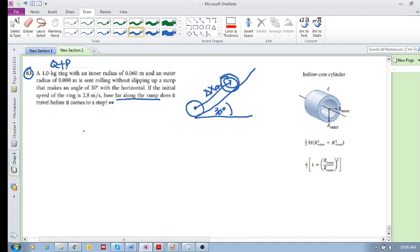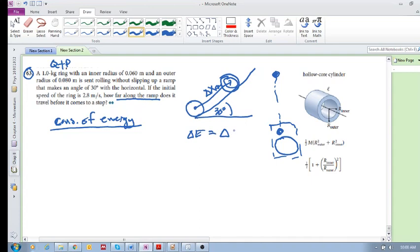What we can consider here is conservation of energy. In the same way as if you take an object and you throw it up, if you include the earth and the ball in your system, then we know that delta E is delta K plus delta U. Remember, this was zero.